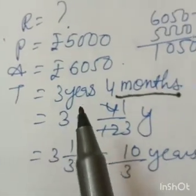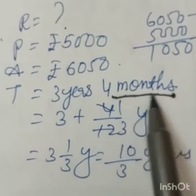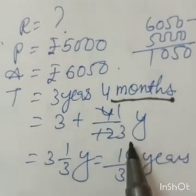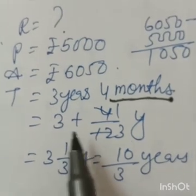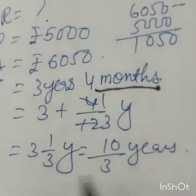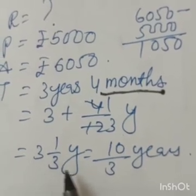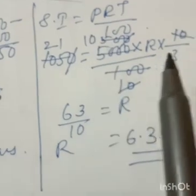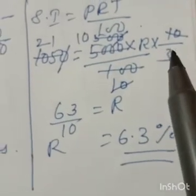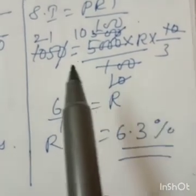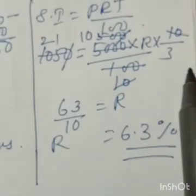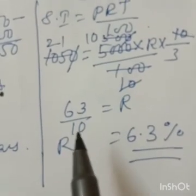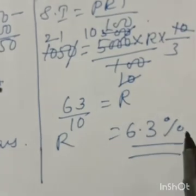Time: 3 years 4 months — convert months to years by dividing by 12. Four divided by 12, cutting by 4, gives 1/3. So time = 3 + 1/3 years — mixed fraction — convert to improper: multiply 3 × 3 = 9, plus 1 = 10/3 years. Putting in the equation and cutting, 21 × 3 = 63; dividing by 10 gives rate = 6.3% per annum.